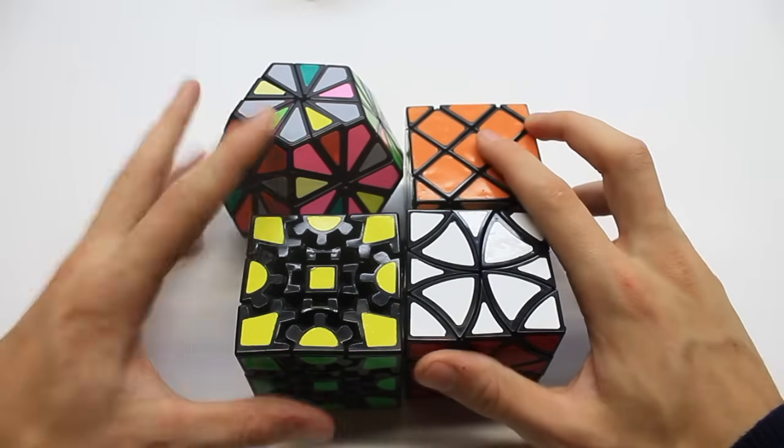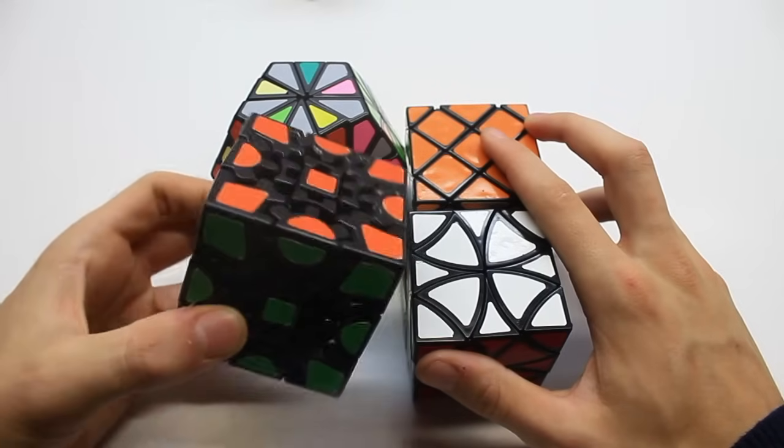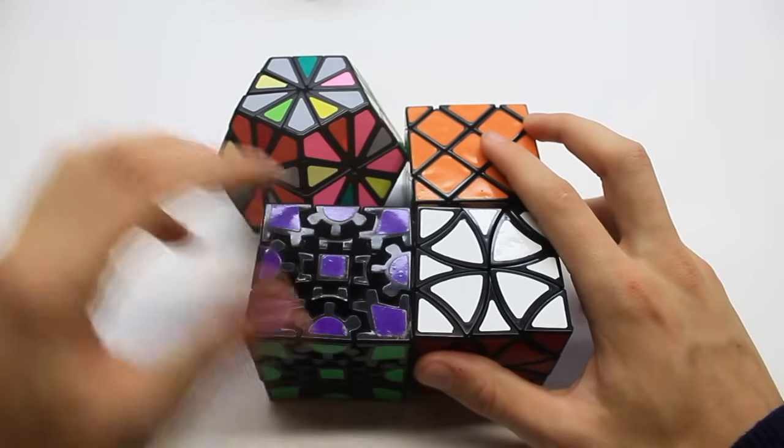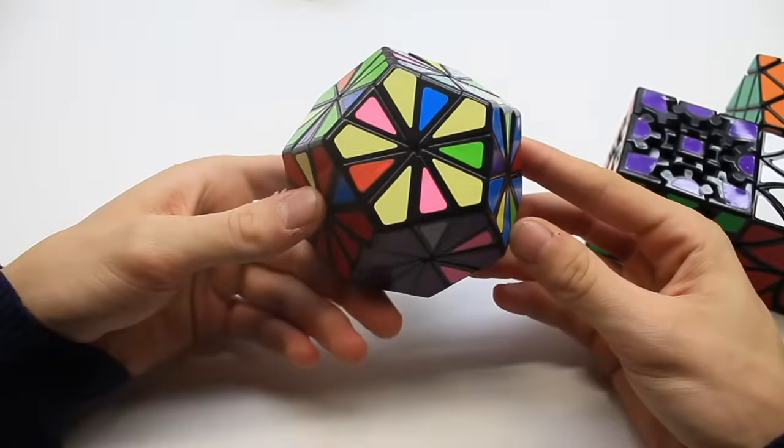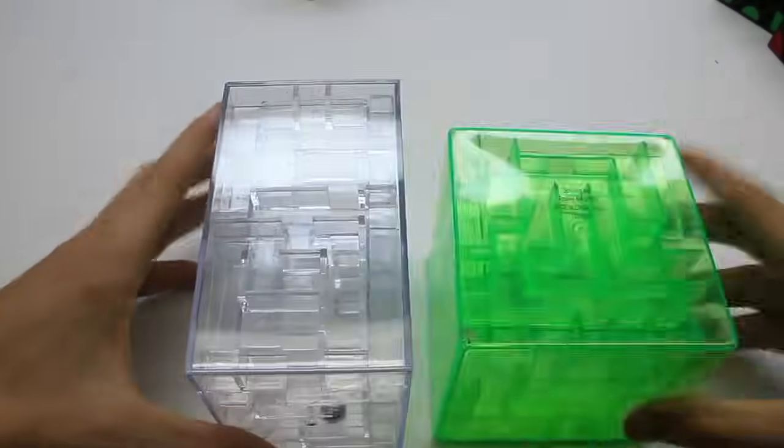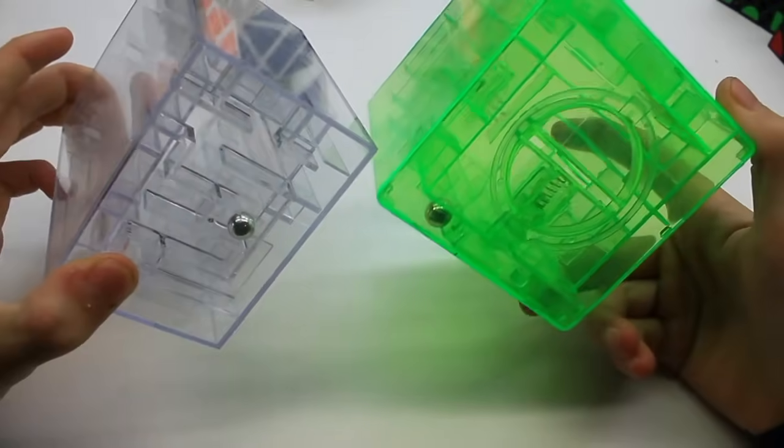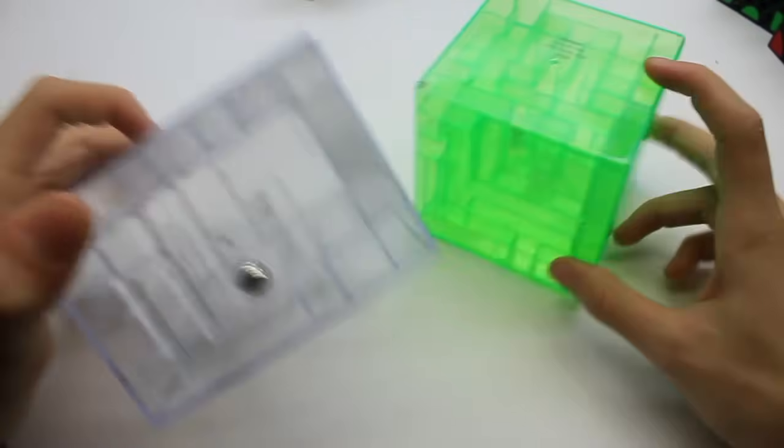And then there's the cat cube and the panda cube. I have a Lanlan Curvy Copter, Lanlan Master's Cube, off-brand knockoff gear cube, and this QJ Crystal Pyraminx which I have not solved in a long time because it's annoying. And last and least is these. These are like maze banks. It's not exactly twisty puzzles but they're kind of fun.